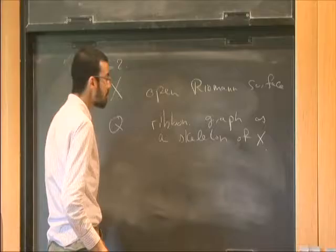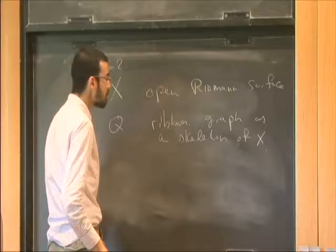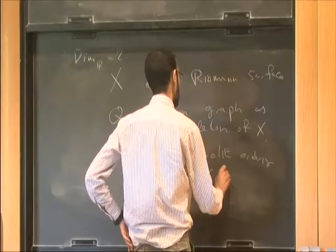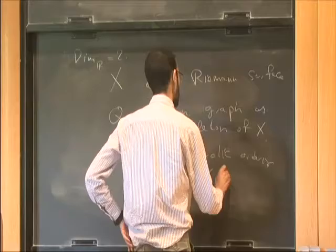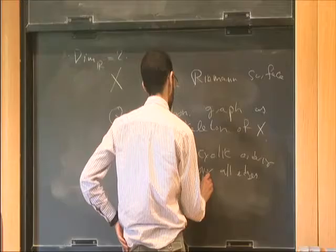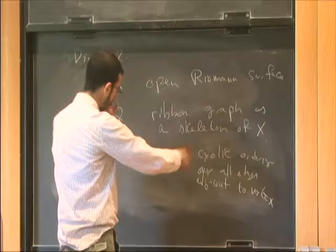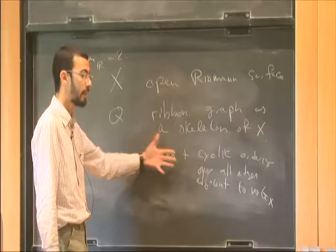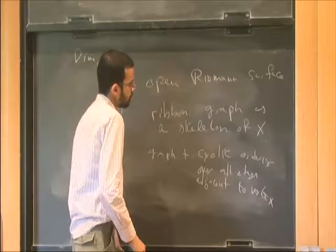What is a ribbon graph? Well, the ribbon graph is just the graph with the data: a graph plus cyclic ordering of all the edges which are adjacent to a given vertex. The only other thing useful to know is that such a cyclic ordering is determined by a local embedding of the graph in the plane.